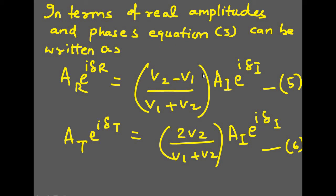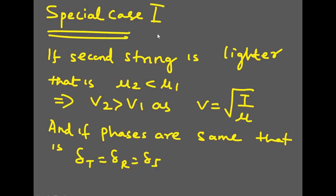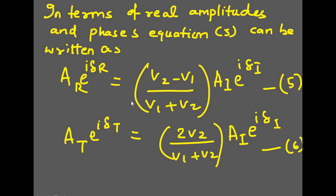Earlier we had absorbed the phase e raised to i*delta. Now we release it. Since there are three waves involved, we must mention three phases: the phase of the incident wave, the phase of the reflected wave, and the phase of the transmitted wave — writing real amplitude and phase for both sides. This is the final expression.